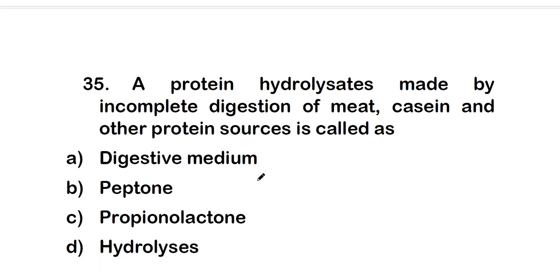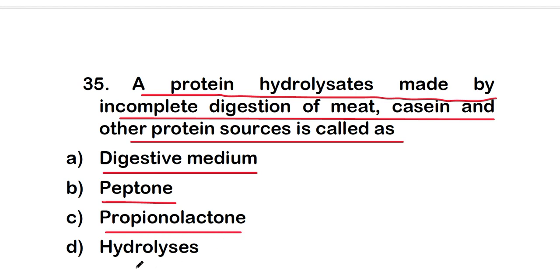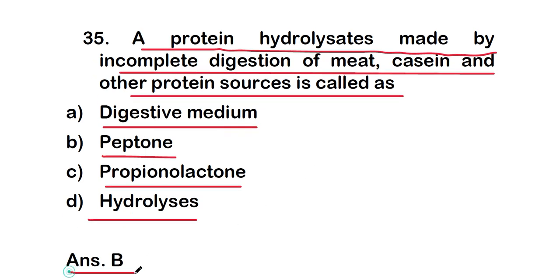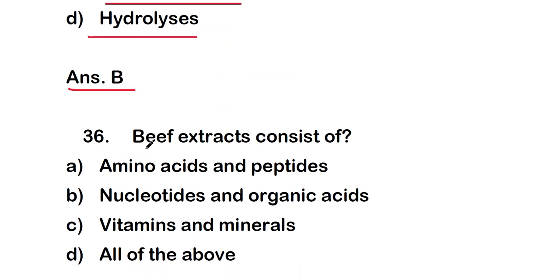Question 35: a protein hydrolysate made by incomplete digestion of meat, casein, and other protein sources is called — option B — peptone. Peptone is a protein hydrolysate produced by incomplete digestion of meat, casein, and other protein sources.